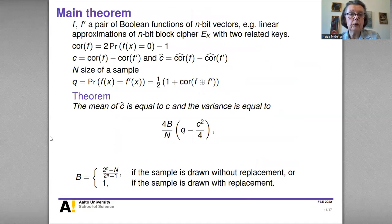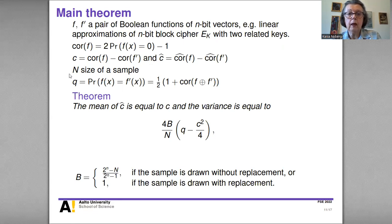The main theorem concerns a pair of Boolean functions of n-bit vectors. Linear approximations are such Boolean functions. We define the correlation as usual, the difference of the correlations, and the sampled correlations in the same way already discussed. Let N denote the sample size. A new parameter, which we denote Q, is introduced.